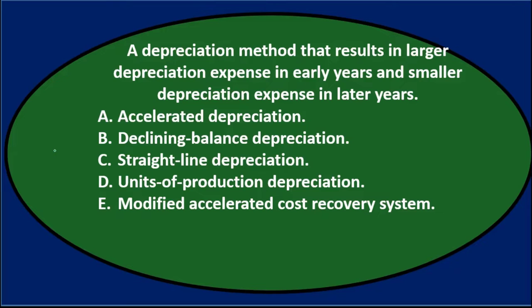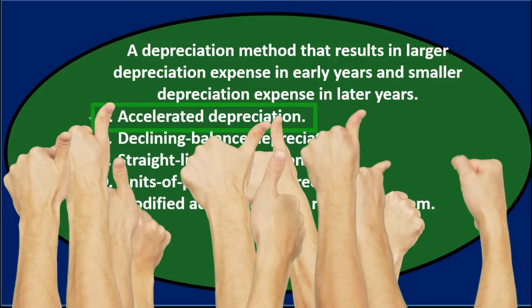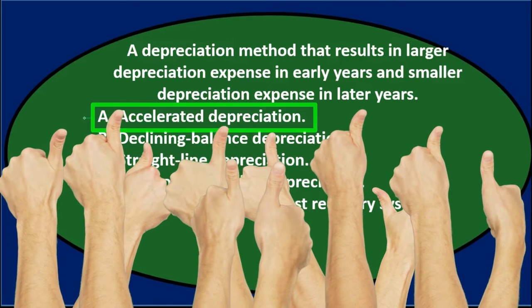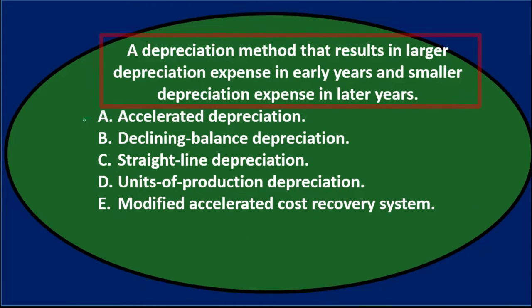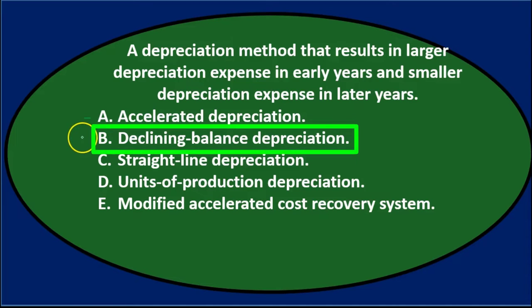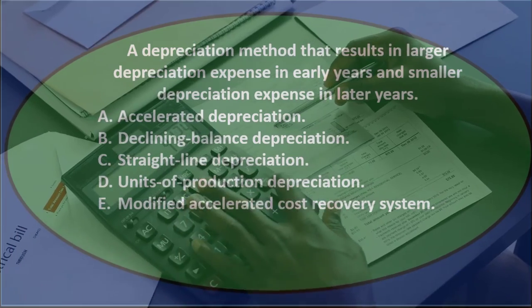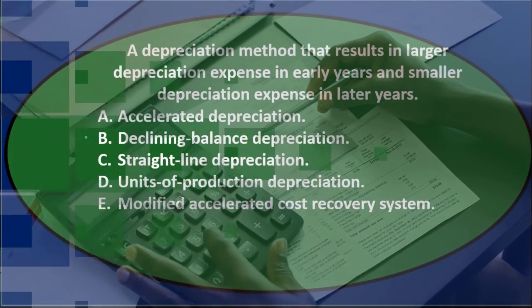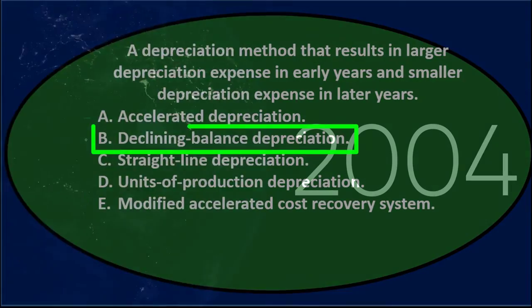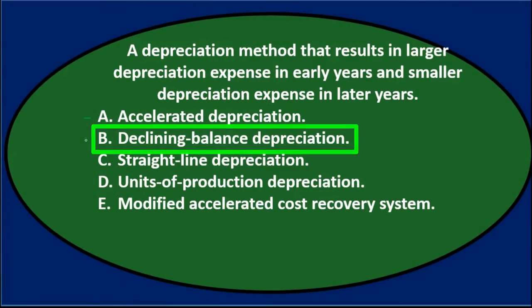So let's go through this again. A depreciation method that results in larger depreciation expense in early years and smaller depreciation expense in later years. A. Accelerated depreciation — that seems right, because under an accelerated method we would have larger expense in early years and lesser in later years. B. Declining balance depreciation — the problem is that one is a form of accelerated depreciation, so it does result in the same thing: expenses being higher in early years and lower in later years.